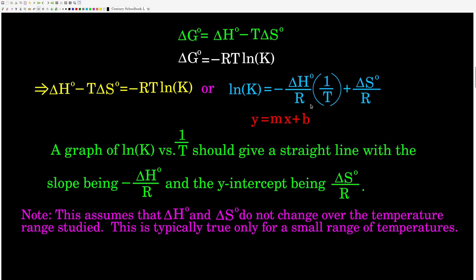Well, that's really nice because this is the equation of a straight line, y equals mx plus b, m being the slope, b being the y-intercept. So in this form here, we see that a graph of the natural log of K as y versus 1 over the temperature in Kelvin as x. So natural log of K is y, 1 over T in Kelvin is x.